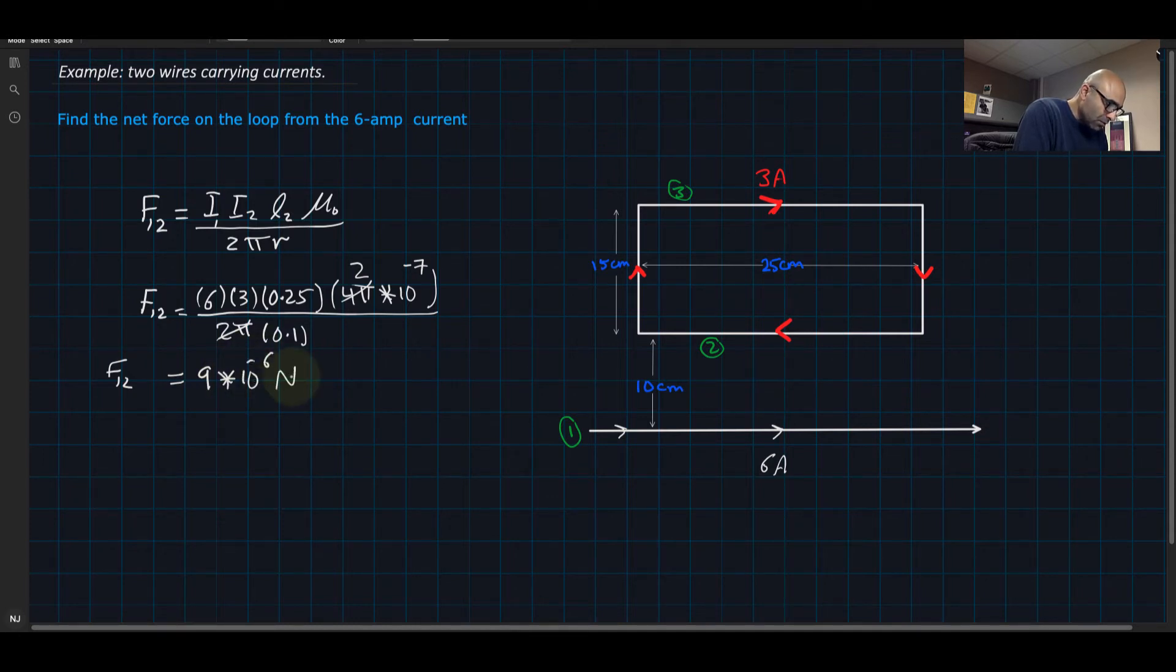Let's see the direction. This one is going this way and this one is going this way, opposite to each other. Since they're opposite, the influence of this current on this current will push it out. So this is the force F1 on 2 repelling it.